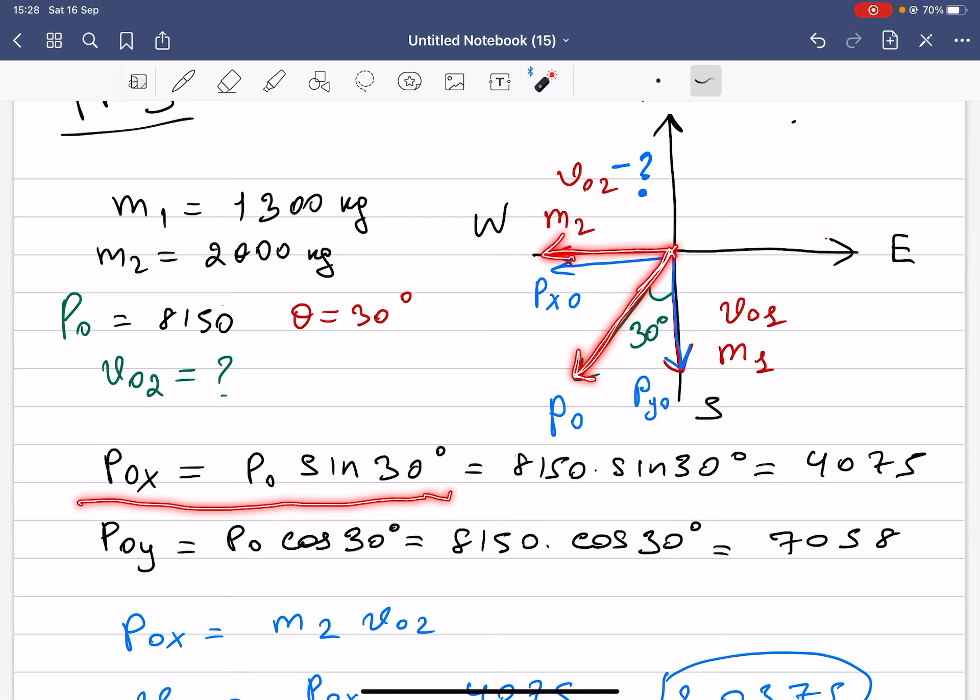We can plug the numbers, which is 8150 multiplied by sine 30 degrees. We get 4075.